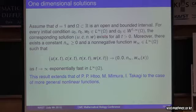the corresponding solution u, c, n, and w exists for all time. Moreover, there exists a constant n infinity and a non-negative function w in L infinity, such that u, c, n, and w converge to 0, 0, n infinity, and w infinity of x, as t tends to infinity, and this convergence is exponential.